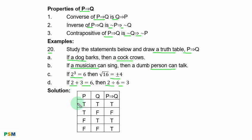Solution: You have the truth table with statements P and Q in the usual arrangement. When the first statement is true and the second is false, the outcome is false. When both are true, the outcome is true. When the first is false and the second is true, the outcome is true. When both are false, the outcome is also true. This is implication or conditional statements.